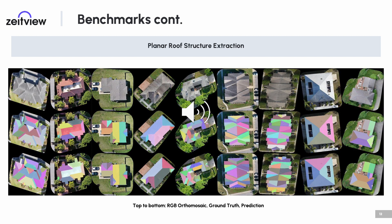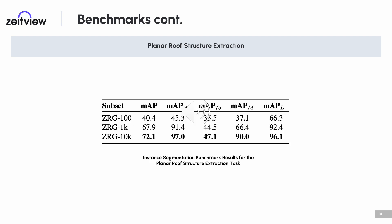We treat the planar roof structure extraction task as an instance segmentation problem, where we want to segment each individual roof face from an overhead view. This is useful when combined with pixel-wise height, which allows for accurate 3D rooftop geometries to be generated. We evaluate on the ZRG test subset using the Mask RCNN architecture with the ResNet-50 backbone. Additionally, we train on the various subsets to observe the change in performance when increasing the training data size.